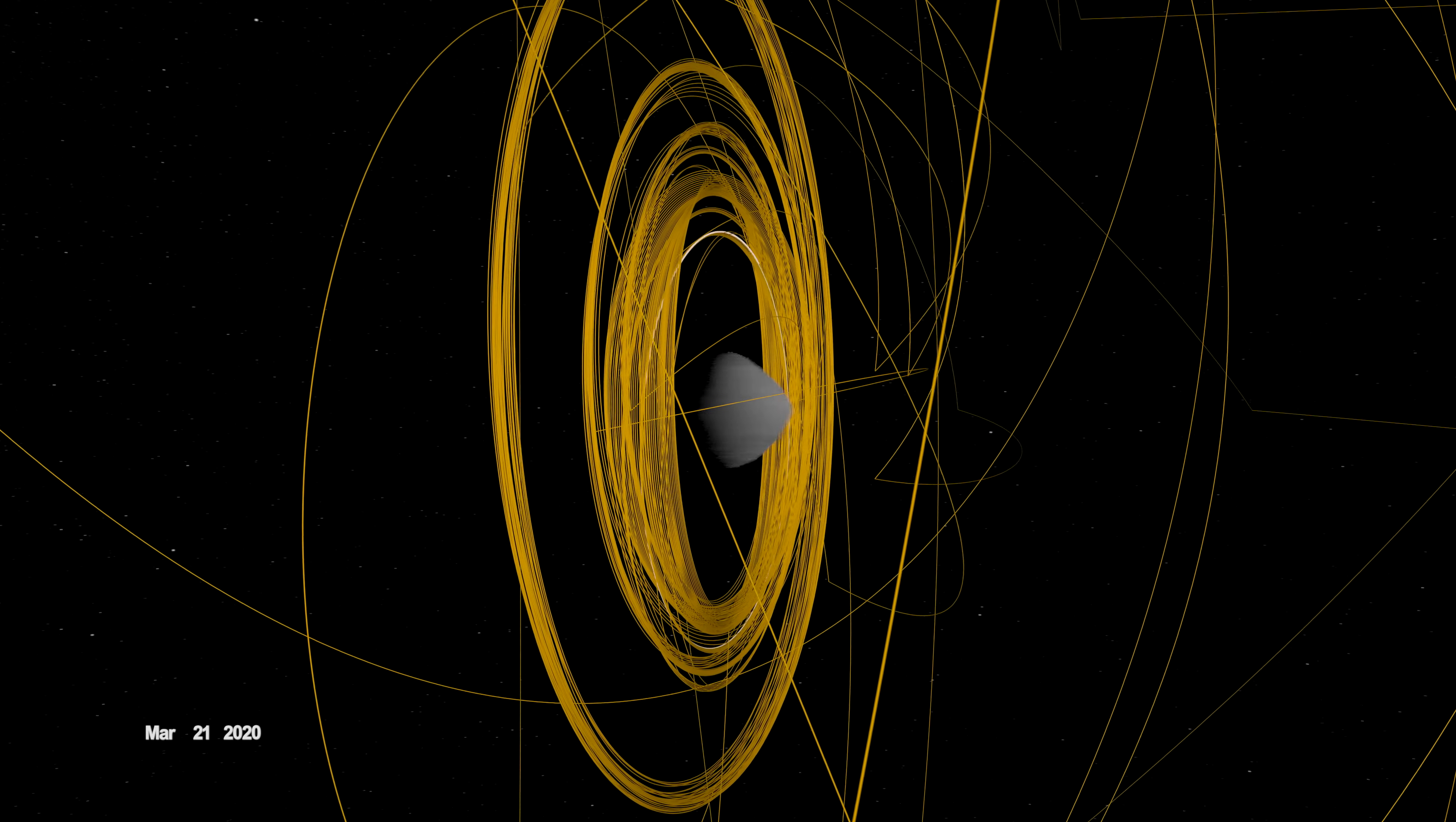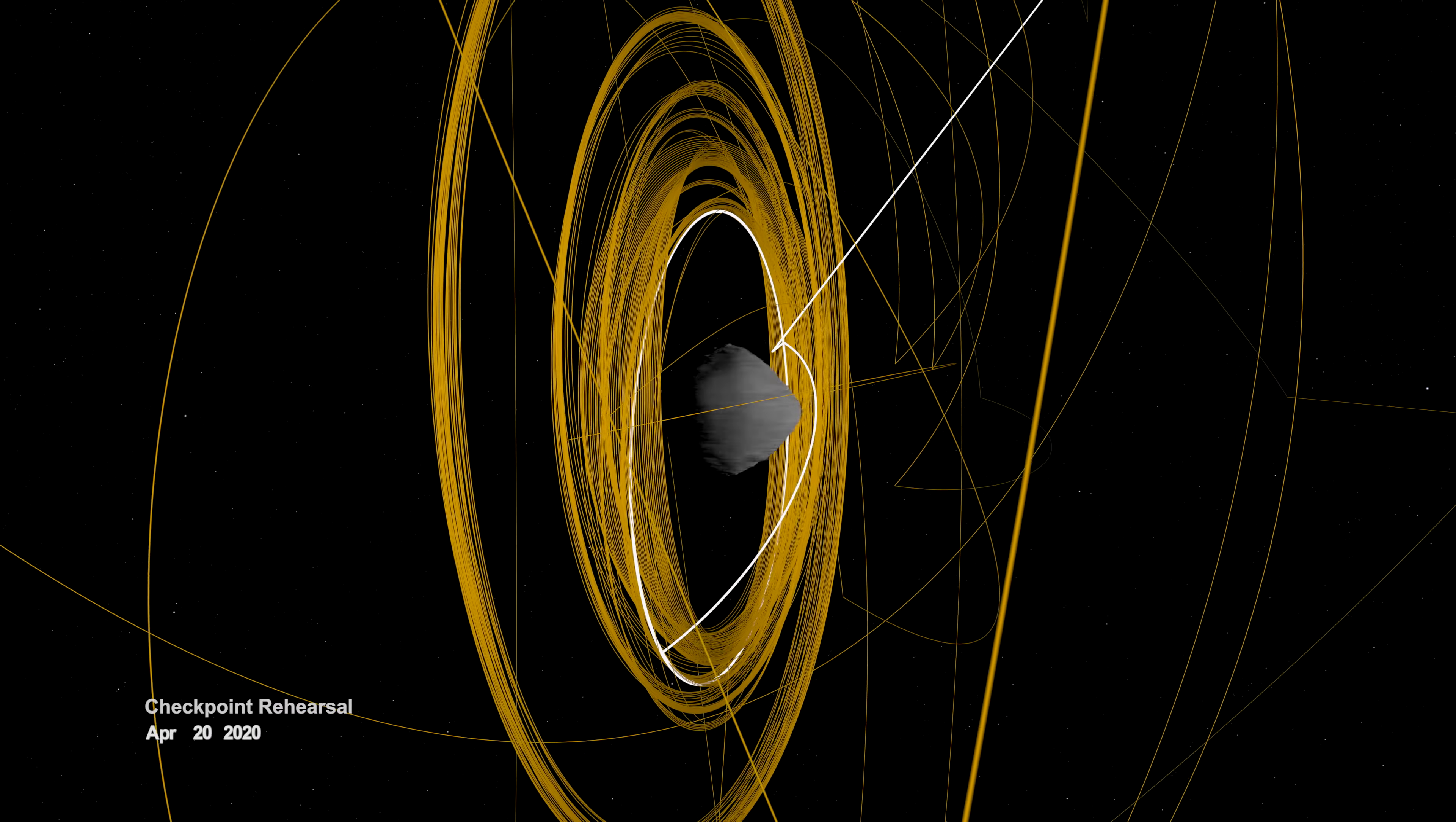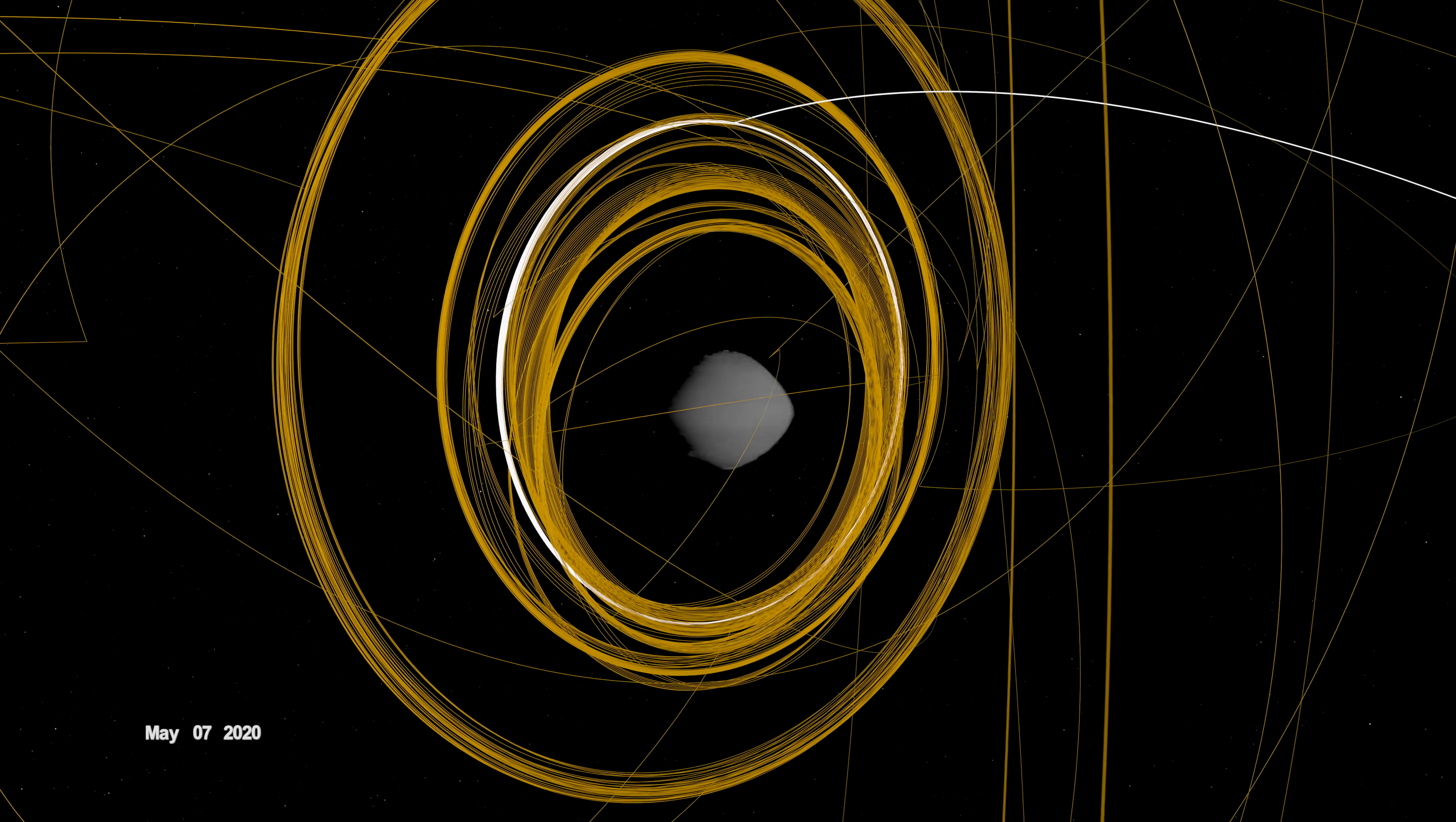In mid-April, OSIRIS-REx performed the first of two rehearsals prior to sample collection. It navigated to a predetermined checkpoint about 125 meters above Bennu, then descended to within 65 meters before backing away.